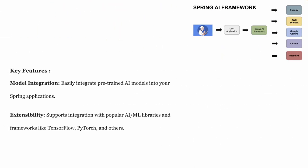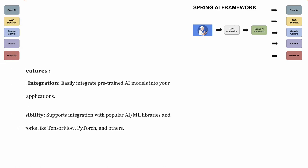Next are the key features. There are two main areas: Model Integration and Extensibility. Model Integration means you can integrate pre-trained AI models into your applications. Extensibility is a framework for your applications — so in this framework you can use TensorFlow and PyTorch and access them.